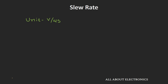The unit of slew rate is V per microsecond. For example, if the slew rate is 1V per microsecond, it means the output will change by 1V in 1 microsecond. For that op-amp to reach from 0 to 5V, it will take around 5 microseconds.